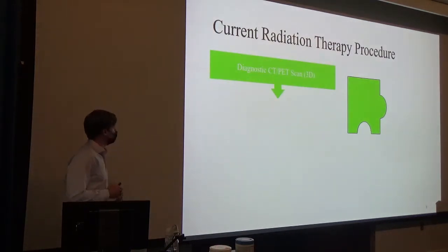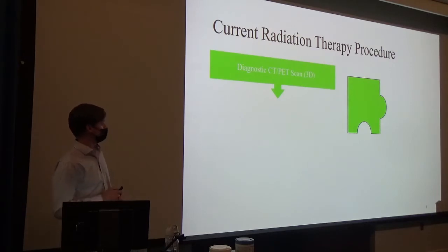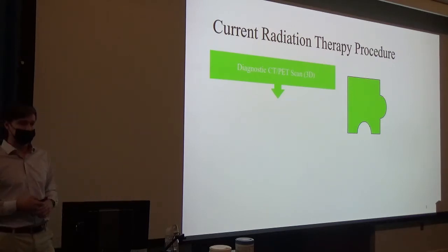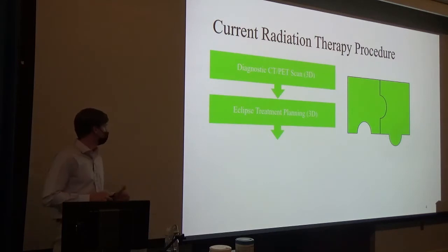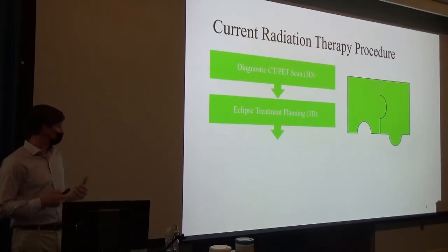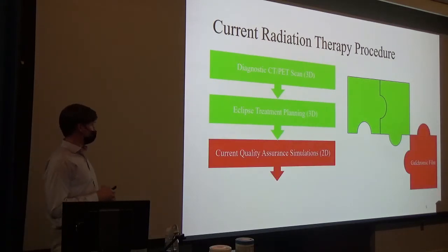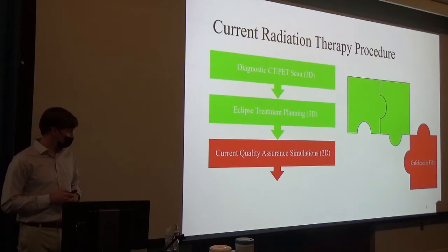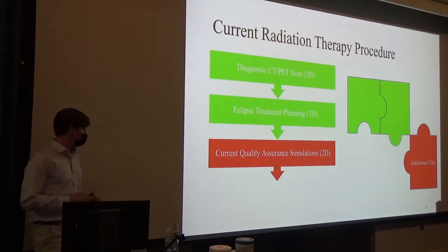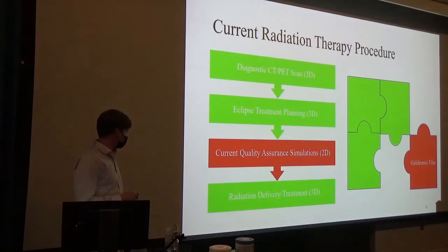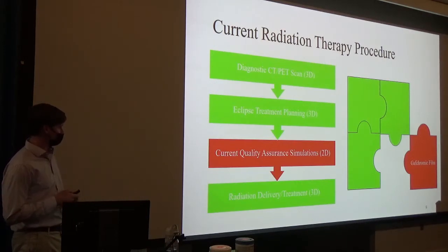So the current radiation therapy procedure: if you were unfortunately diagnosed with cancer, you would have a diagnostic CT — computed tomography — or PET scan, in which the dosimetrist will go in and circle the tumors as well as the organs at risk they'd like to spare. From there they send it to the radiation oncologist, who forms a treatment plan to eradicate the tumor. This goes through very complex algorithms to optimize the plan. Once they're happy with it, they test the plan during a quality assurance simulation — but unfortunately that's done in two dimensions currently, using gafchromic and radiochromic films. Everything else in the process is done in three dimensions, but the quality assurance simulation is in 2D.